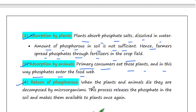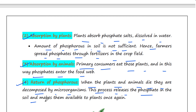The next stage is the return of phosphorus. When plants and animals die, they are decomposed by microorganisms, and this process releases phosphate into the soil.